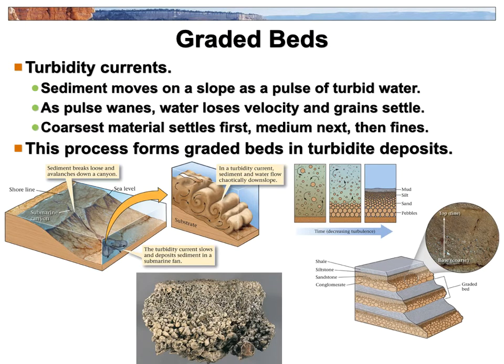Turbidity currents create another type of sedimentary structure — turbidites. If you find a rock with bigger pebbles at the bottom, finer pebbles above that, then even finer sand, then fine silt, that's a turbidite. It happens when there's a steep area offshore and an underwater avalanche occurs — material slides down the slope, stirs up, becomes turbid and turbulent. The heavy stuff sinks quickly, then lighter material above that, then the finest silts and clays settle on top. When that turns to rock, you get a perfectly graded layer from big pebbles to the finest stuff — a turbidite.